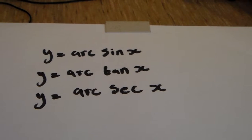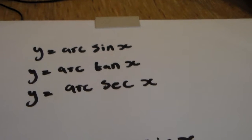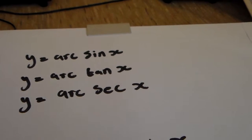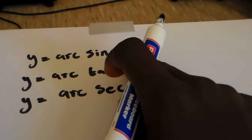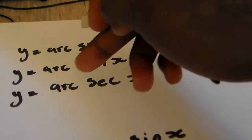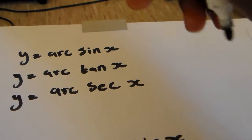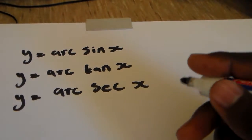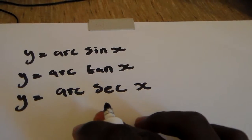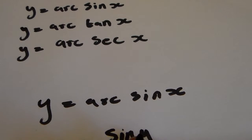Today we're going to look at the derivative of the inverse trigonometry. When talking about the inverse trig functions, we're talking about arcsin, so if we have y is equal to arcsin, then y is equal to arctan x, and then y is equal to arc sec x.